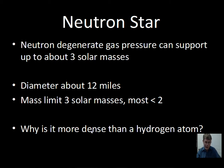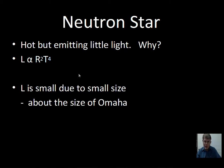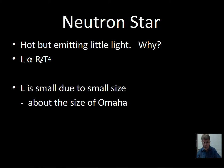Neutron stars are very hot — tens of thousands to hundreds of thousands of Kelvins — but there's not much light emitted, and only a few have been photographed. The reason is their overwhelmingly small size: in the luminosity formula, even though the temperature T is a large number, the r-squared factor dominates, giving very little luminosity. Neutron stars are not intrinsically bright; they're not giving off a lot of energy, especially in the visible range.